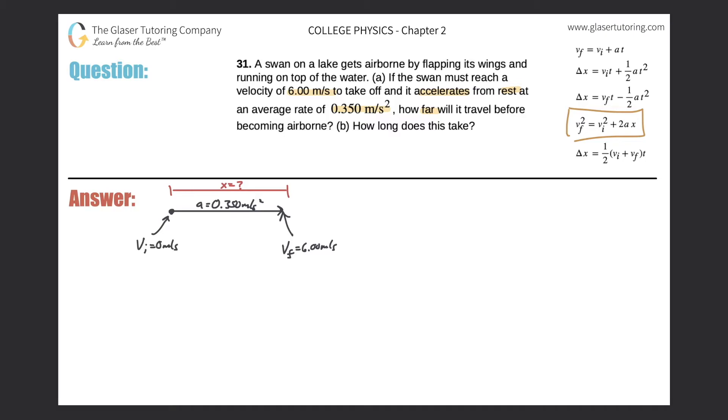So let's write it down. So we have the final velocity squared is equal to the initial velocity squared, plus two times the acceleration multiplied by the displacement. So the final velocity is 6.00, that's squared. The initial velocity was zero, and that's squared, plus two times the acceleration, which is 0.350, and now my displacement, which is x.